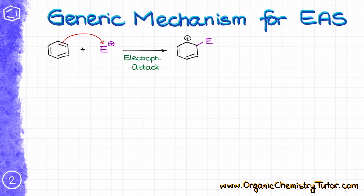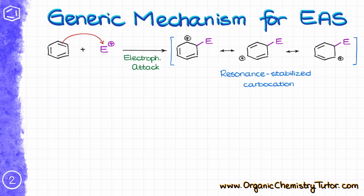Once that attack happens, we end up with a carbocation. This carbocation is resonance stabilized, so we can draw three resonance contributors for it. There will be a lot of resonance drawing in this topic, so if you are not feeling comfortable with resonance or need a refresher, make sure you review it. We're going to be using resonance as one of our main tools here, so it's crucial you are comfortable with it.